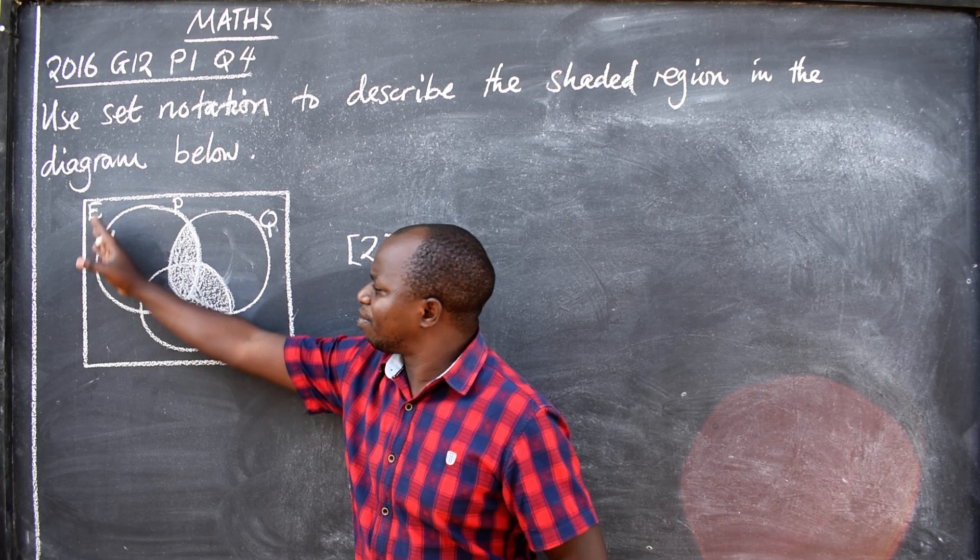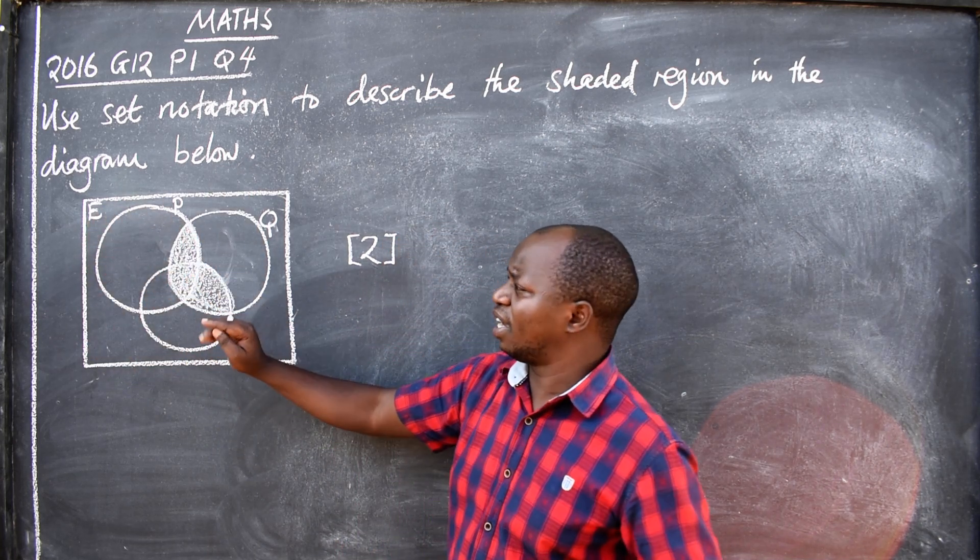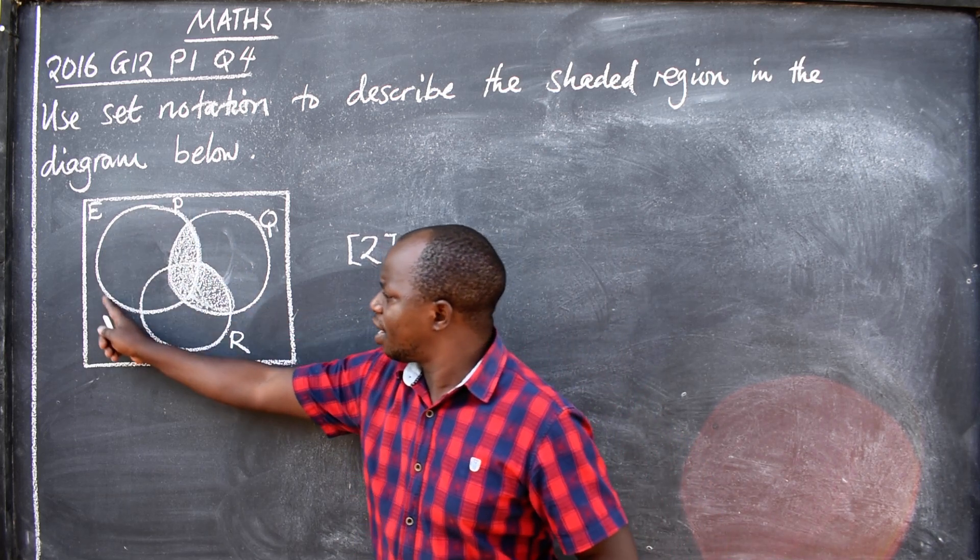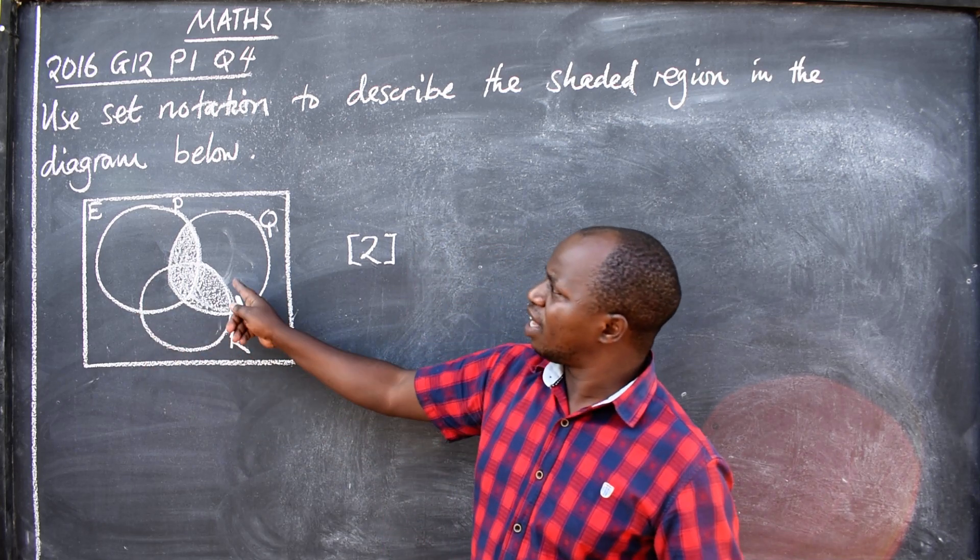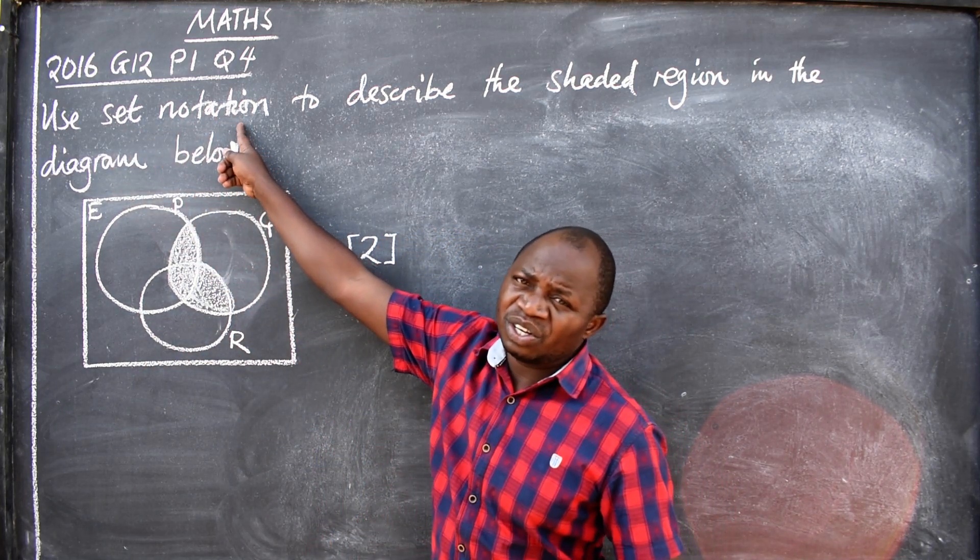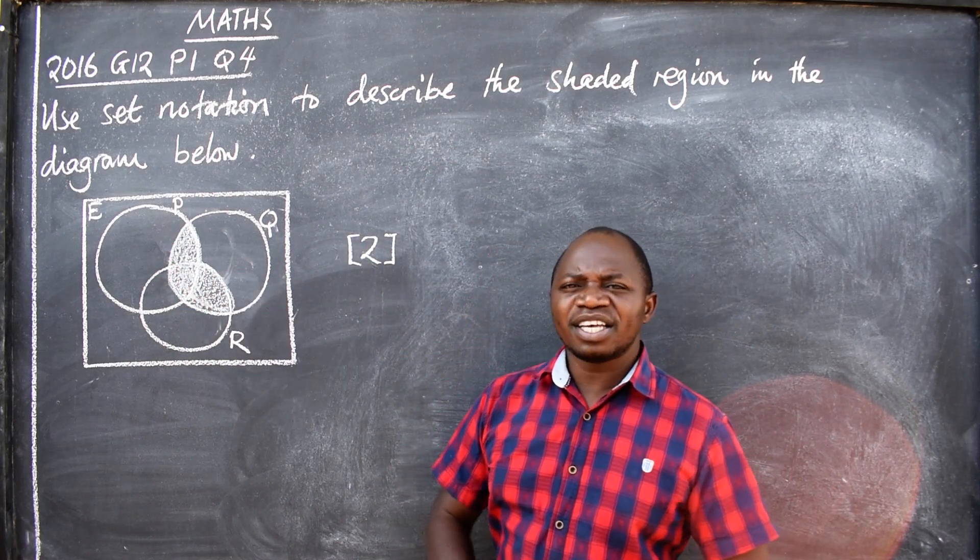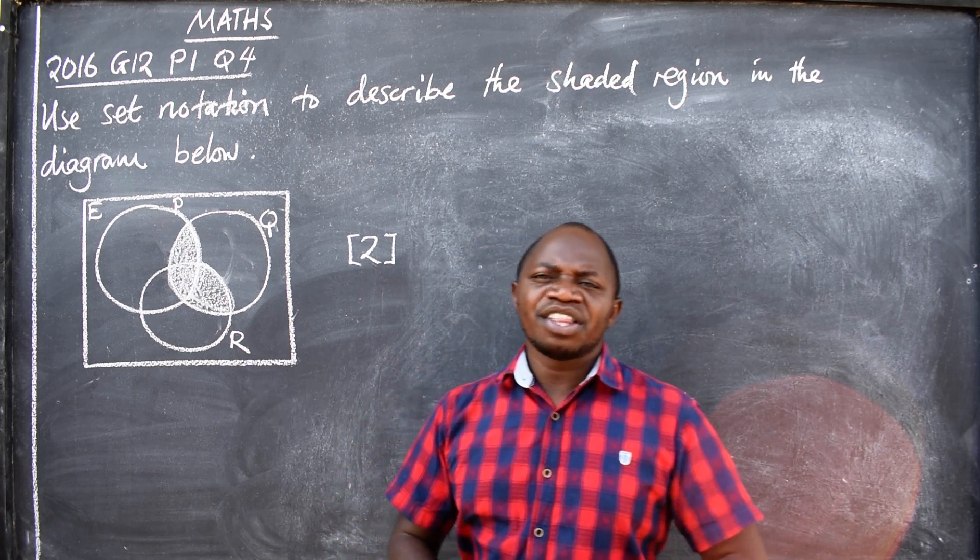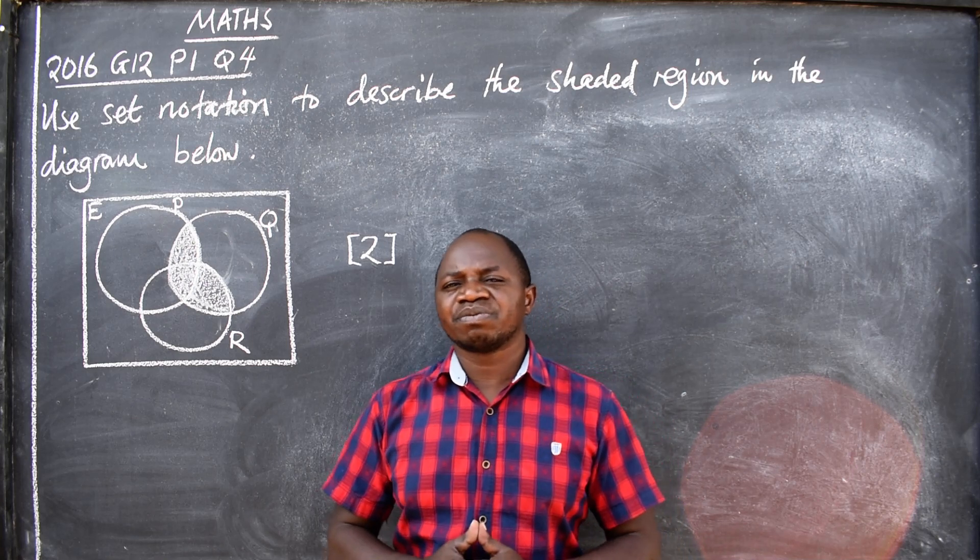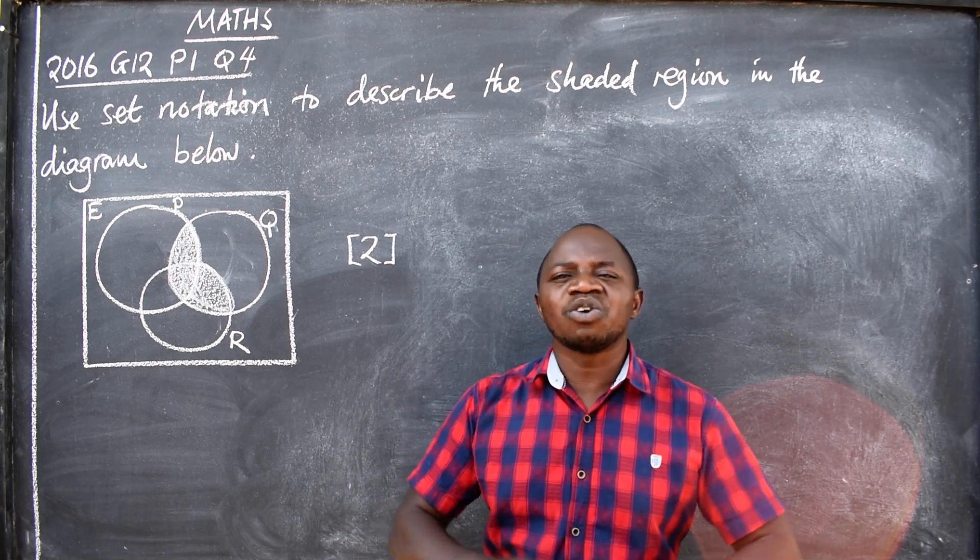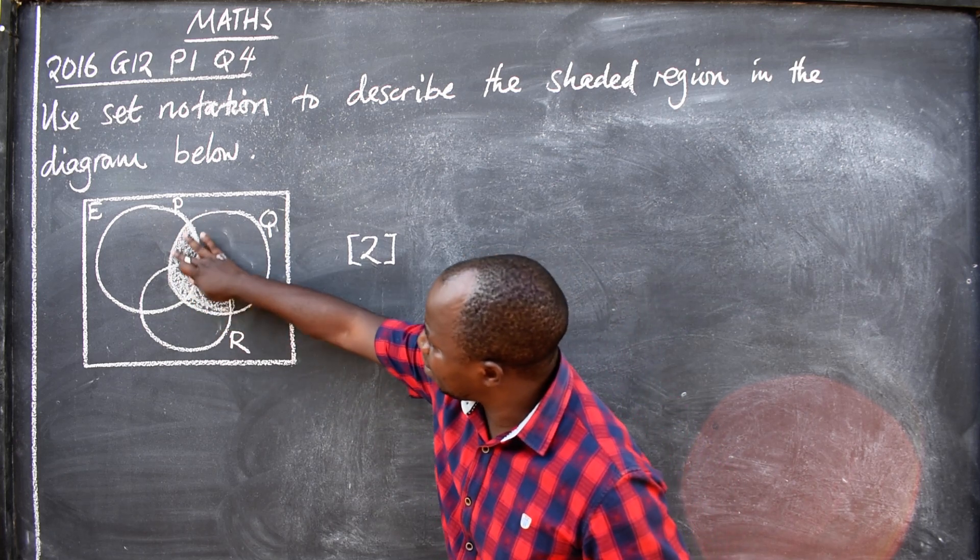This was the diagram that was given. You can see this diagram has the universal set, and we also have three sets inside: set P, set Q, and set R. Now they are saying use set notation to describe what is shaded here. When they say set notation, they are talking about the use of intersection, union, and all set symbols.